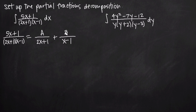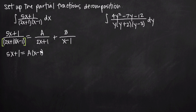Once we have our decomposition, we're going to multiply both sides by the denominator from the left hand side. On the left hand side that just leaves us with the numerator because the denominator cancels completely. On the right hand side, the 2x plus 1 factor cancels and we're left with A times x minus 1, and the x minus 1 factor cancels leaving us with B times quantity 2x plus 1.